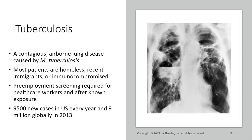Tuberculosis is an airborne lung disease. Most patients are homeless or recent immigrants, or people whose immune systems are compromised. We always do pre-employment screening — either a two-step skin test and then annual single tests, or the QuantiFERON, which is considered better. You often don't know you've been exposed, so screening is really important. There are 9,500 new cases in the US every year and 9 million globally — and that was back in 2013.